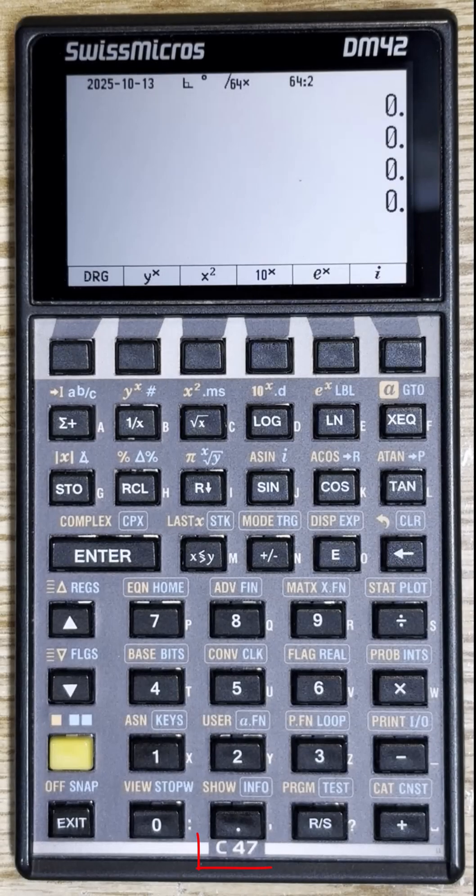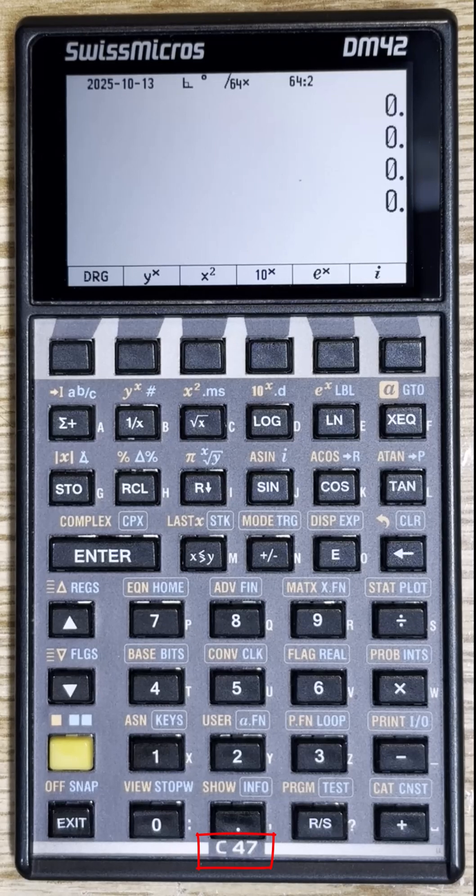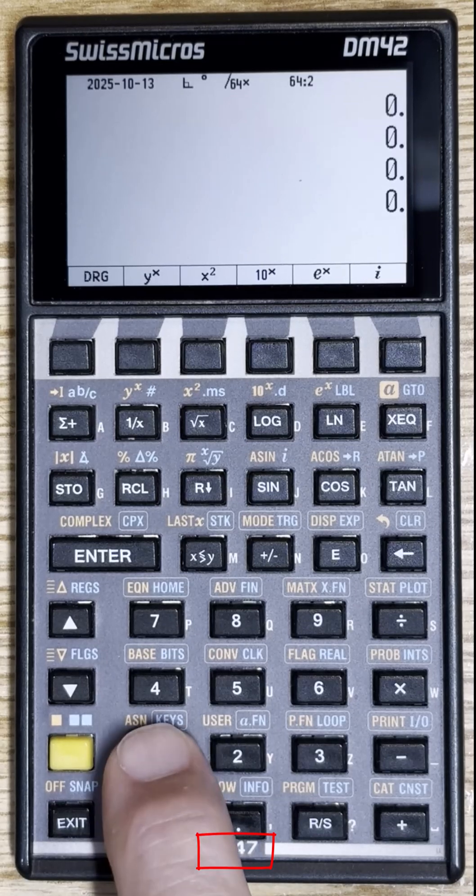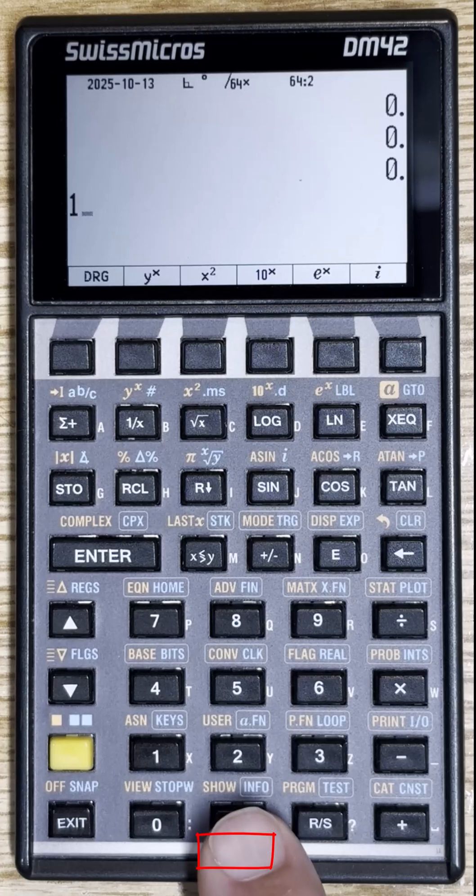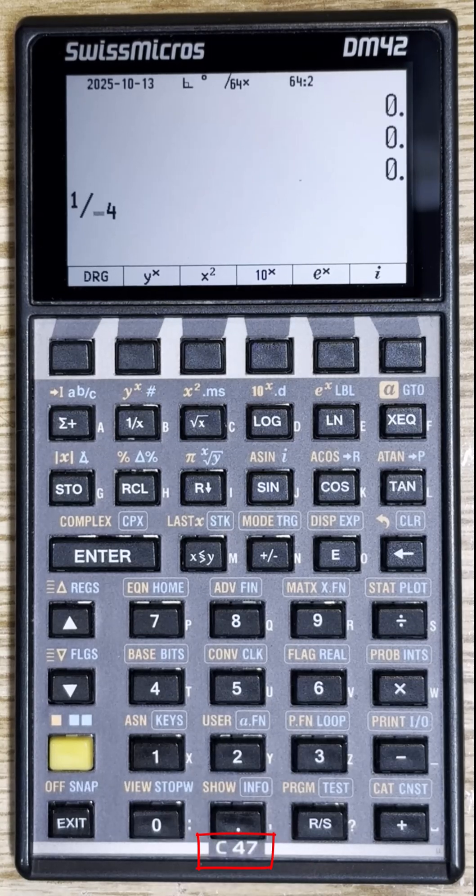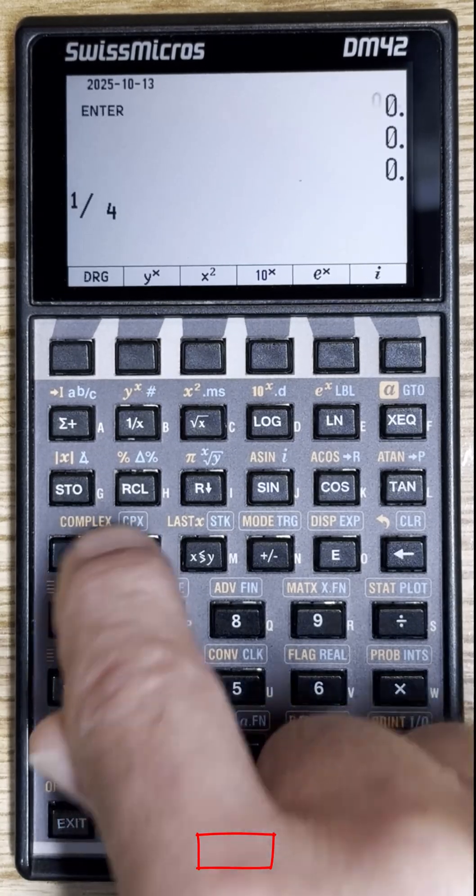The C47 calculator has a lot of menus and operating modes, and it's easy for a new user to get lost. For example, if you're entering a number and you accidentally push the decimal separator key twice, you will enter fraction mode in the C47 calculator.